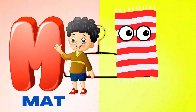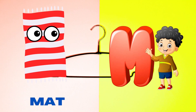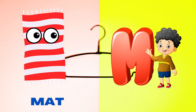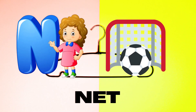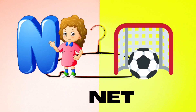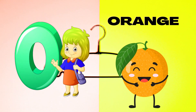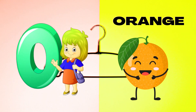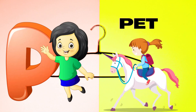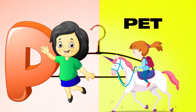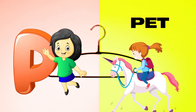M is for Mat, M-M-Mat. N is for Net, N-N-Net. O is for Orange, O-O-Orange. P is for Pet, P-P-Pet.